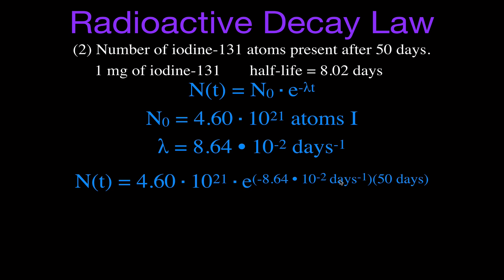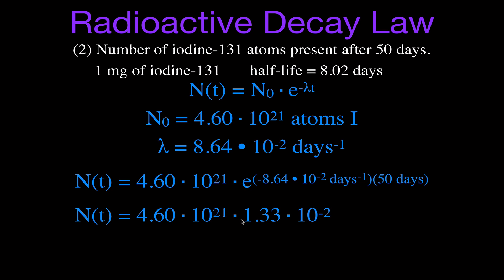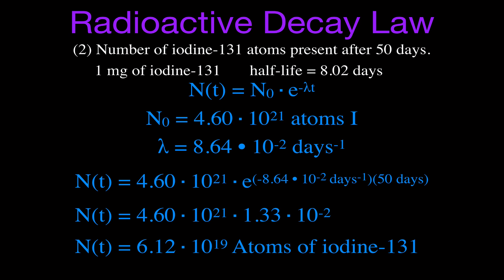So evaluating the exponent: e raised to that power gives 1.33×10⁻². Multiplying that by N₀ = 4.6×10²¹, we find that after 50 days, starting from one milligram of iodine-131 with a half-life of 8.02 days, you are left with 6.12×10¹⁹ atoms of iodine-131.